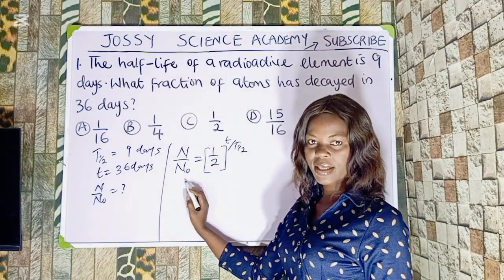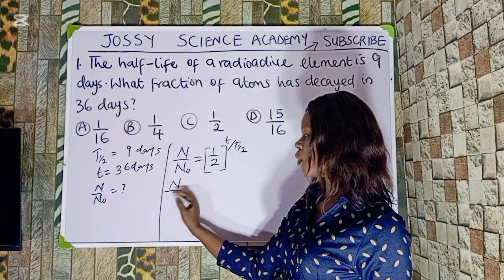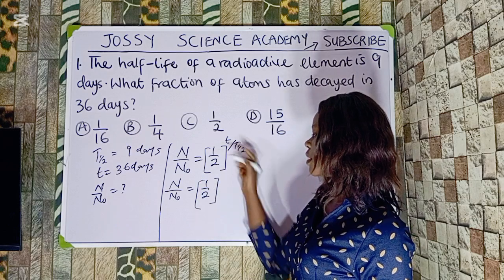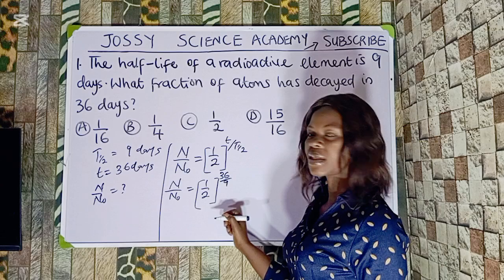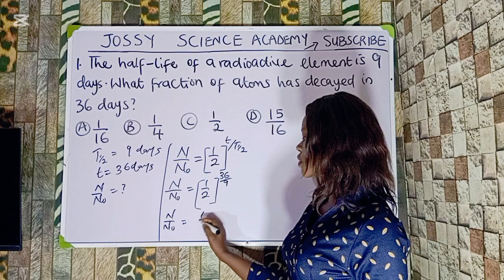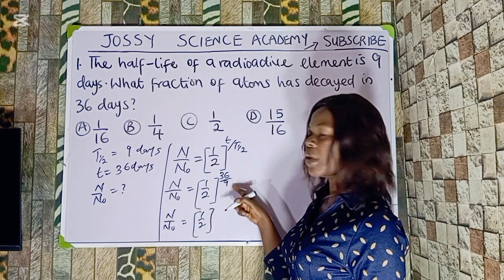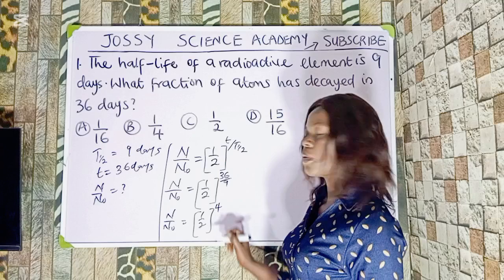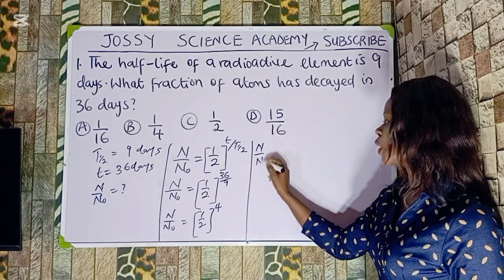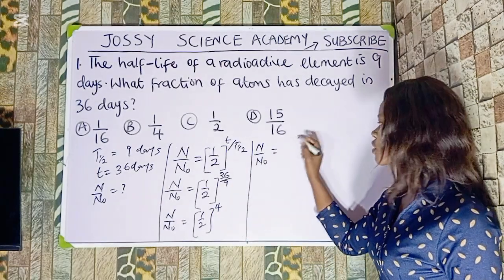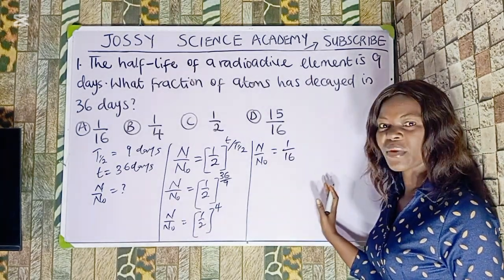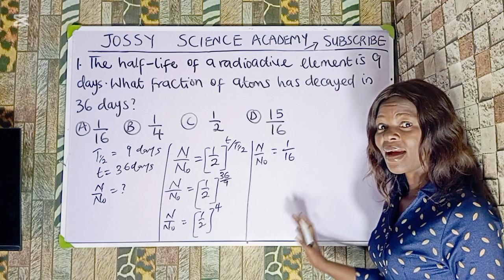Looking for the fraction that has decayed, N over N0 equals 1 over 2 raised to the power of 36 over 9. Now, 36 divided by 9 gives 4. So N over N0 equals 1 over 2 to the power of 4. 1 to the power of 4 is 1, and 2 to the power of 4 is 16. So N over N0 equals 1 over 16.